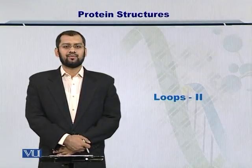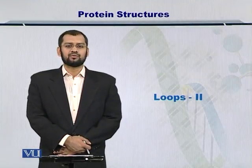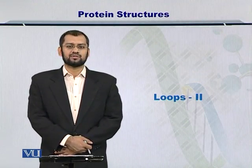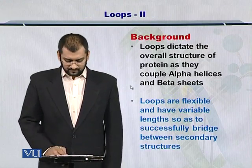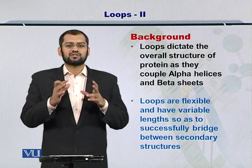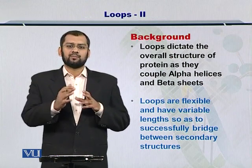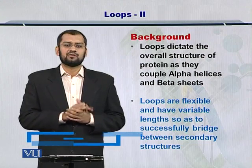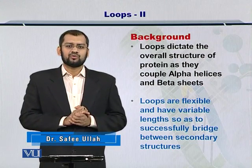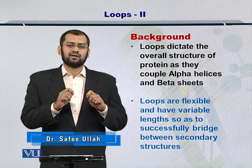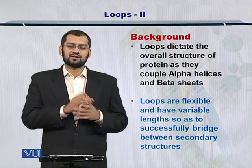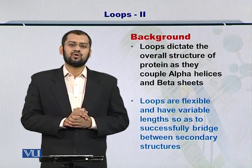Dear students, in this module I will continue to elaborate on the loops, which are a type of secondary structures in the overall organization of proteins. The loops are known to dictate the overall structure of proteins because they bring together various other secondary structures such as alpha helices and beta sheets. Also, they are flexible as well as variable in length because they have to couple the secondary structures in different structural conformations.